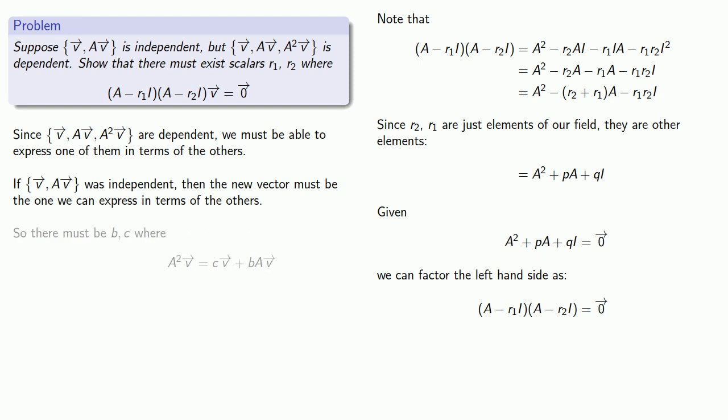And so that means there must be some b's and c's where A²v is c times v plus b times Av.